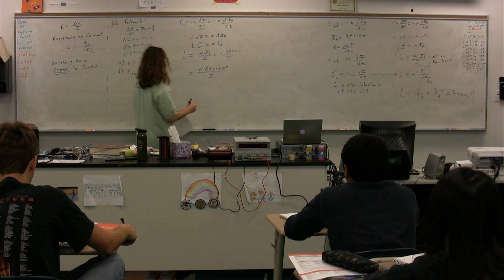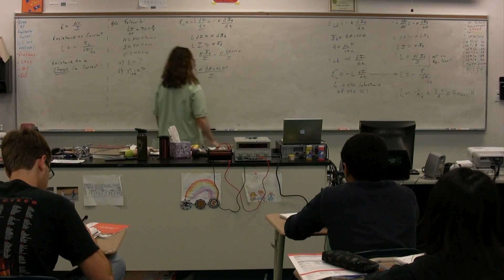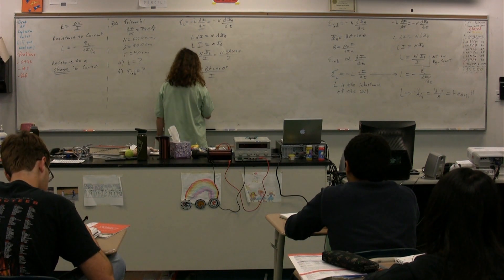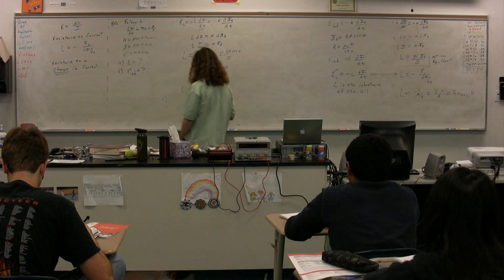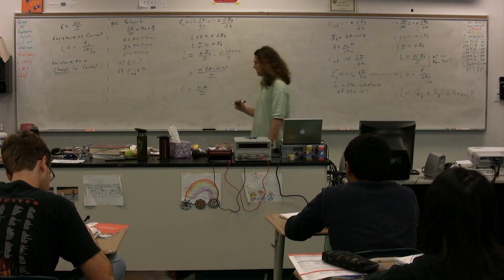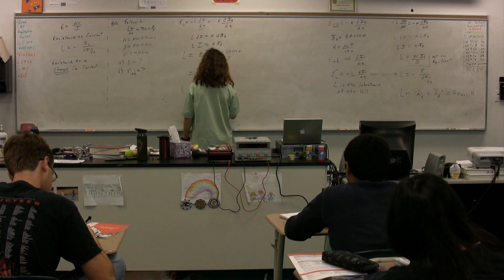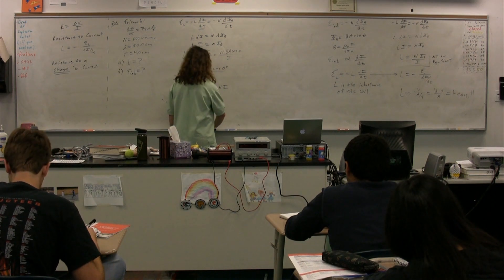We have a magnetic field of a solenoid. Good. So we have n times A divided by the current. What's the magnetic field for a solenoid? It's mu naught n I. Right. Close.